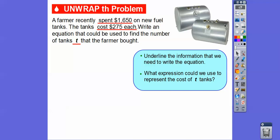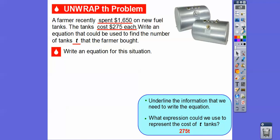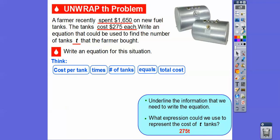So we'll use these three pieces of information to write our equation. What expression could we use to represent the cost of tanks? Well, if $275 is the cost of one tank, and we're buying T of them, then we'd multiply those. So it would be 275 times T. All right, so let's go ahead and write an equation for this situation.